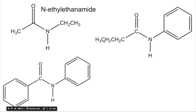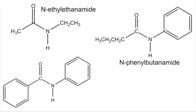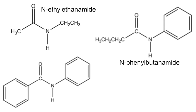This one as a carboxylic acid would be one, two, three, four carbons — butanoic acid — so butanamide. On the N we've got a phenyl group, so it's N-phenyl butanamide. The last one: the carboxylic acid would have been benzoic acid, so this is a benzamide, and we've got a phenyl group on the N, so it's N-phenyl benzamide.